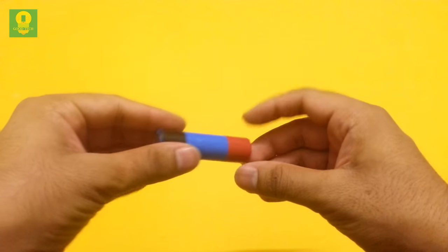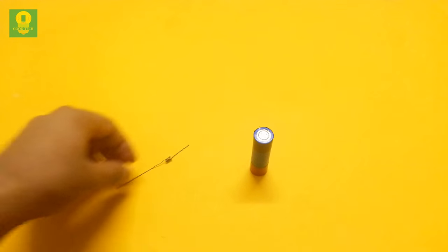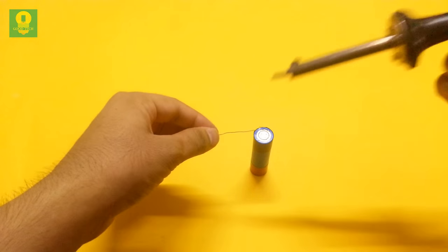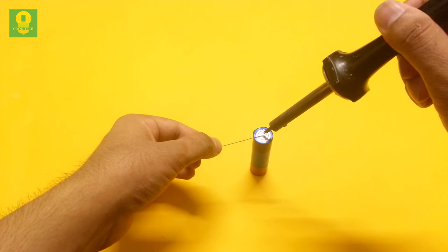Take a lithium iron cell. Solder the wire on the negative terminal of the battery.